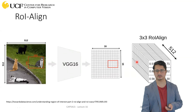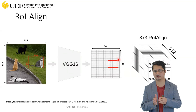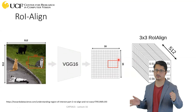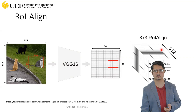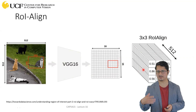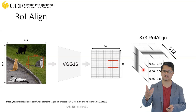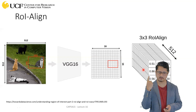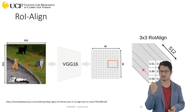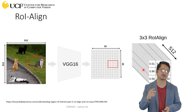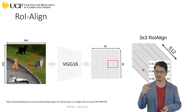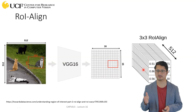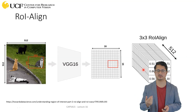This is not just one channel — your feature map is a stack of multiple channels. You do the same process for all channels and get the final features. These features can then be used for classification, predicting bounding boxes, and on top of that you can have a small segmentation network — a few layers of convolution — which will give you the segmentation boundary.